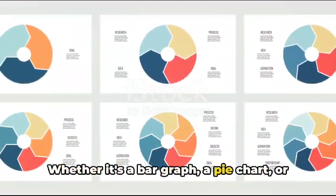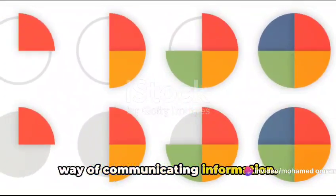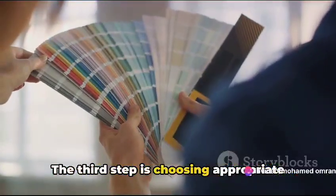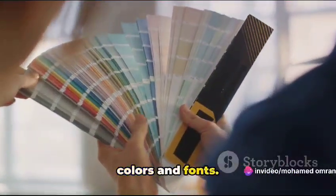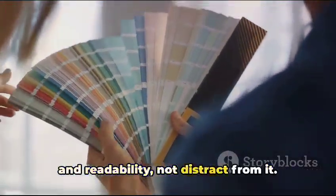Whether it's a bar graph, a pie chart or a scatter plot, each has its own unique way of communicating information. The third step is choosing appropriate colors and fonts. They should enhance the data's visibility and readability, not distract from it.